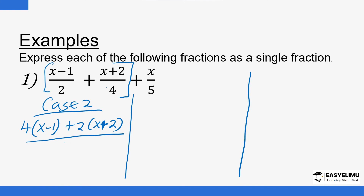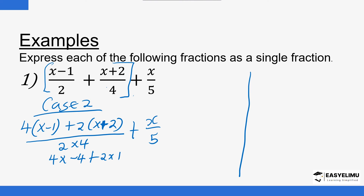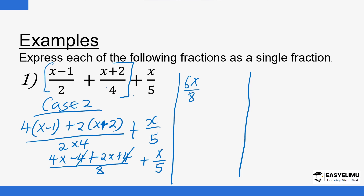That is plus, divided by the product of the denominators: 2 × 4 = 8. Of course, after that you remember to add the other term, x over 5. Opening the brackets: 4x − 4 + 2x + 4, all divided by 8, plus x over 5. The −4 and +4 cancel, leaving 4x + 2x = 6x, so we have 6x over 8 plus x over 5.